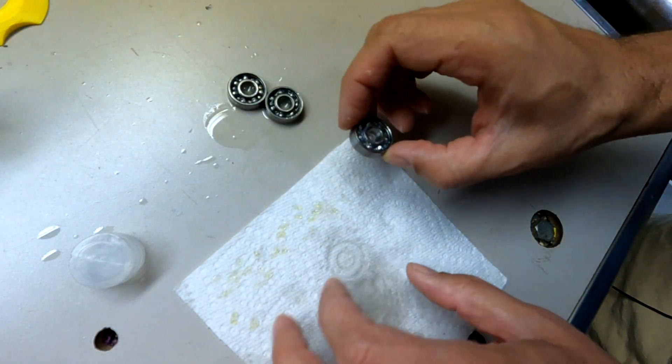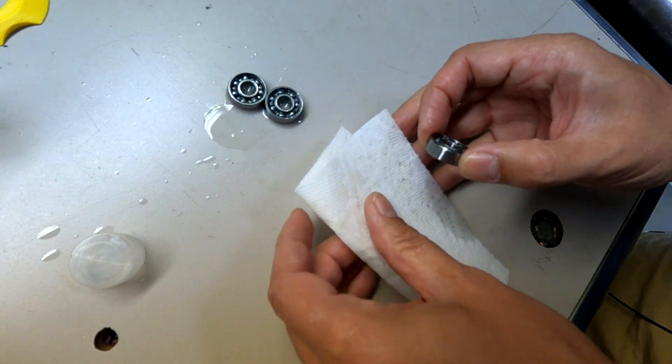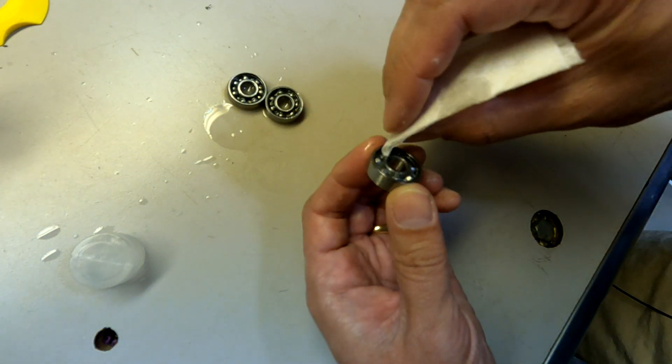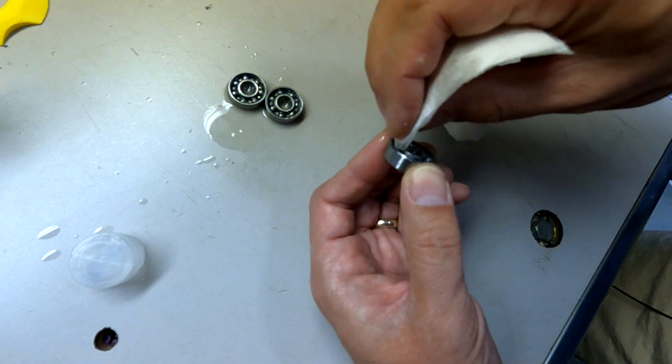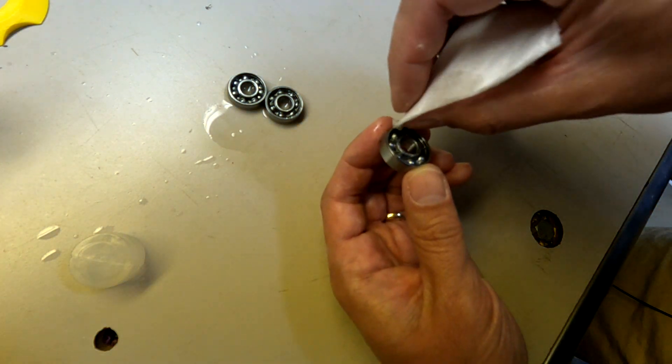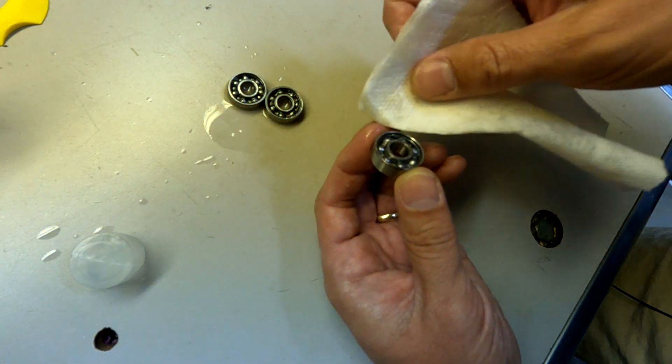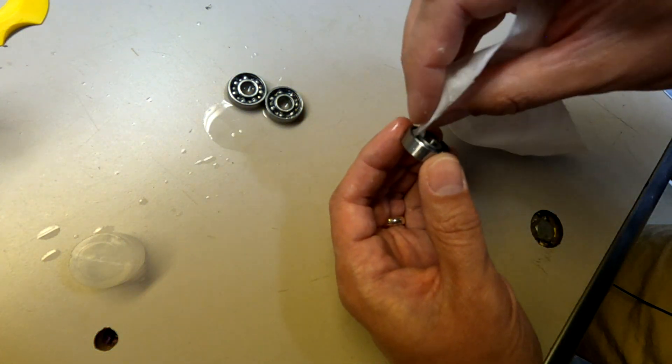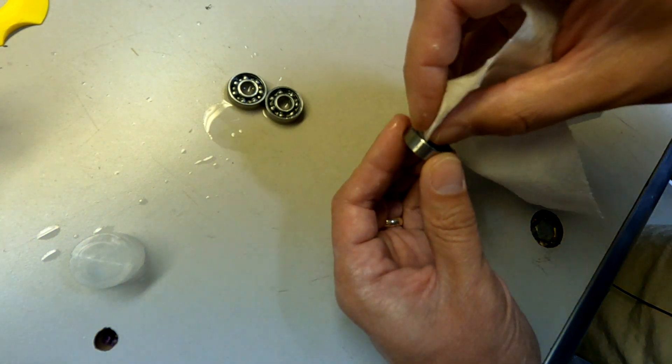Now I'm going to return to the first of the bearings and I'm going to fold over my paper towel and then just take the edge of it and use it to try to wipe out some of that extra grease that's inside of here and I'll kind of keep on moving over to get to a fresh spot on that fold.